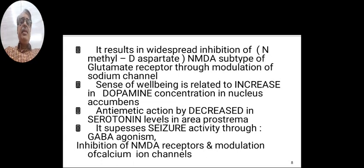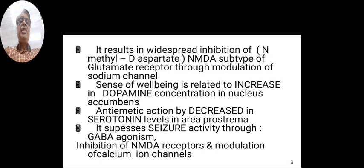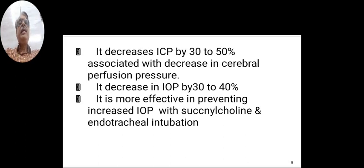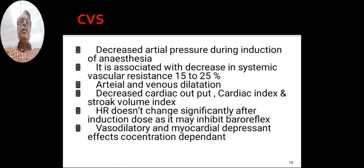The sense of well-being is related to an increase in dopamine concentration in the nucleus accumbens. The antiemetic action is by decrease in serotonin levels in the area postrema. It suppresses seizure activity through GABA agonism, inhibition of NMDA receptors, and modulation of calcium ion channels. It decreases intracranial pressure by 30-50% and is associated with decreased cerebral perfusion pressure. It decreases intraocular pressure by 30-40%, and is more effective in preventing intraocular pressure rise with succinylcholine and after endotracheal intubation.